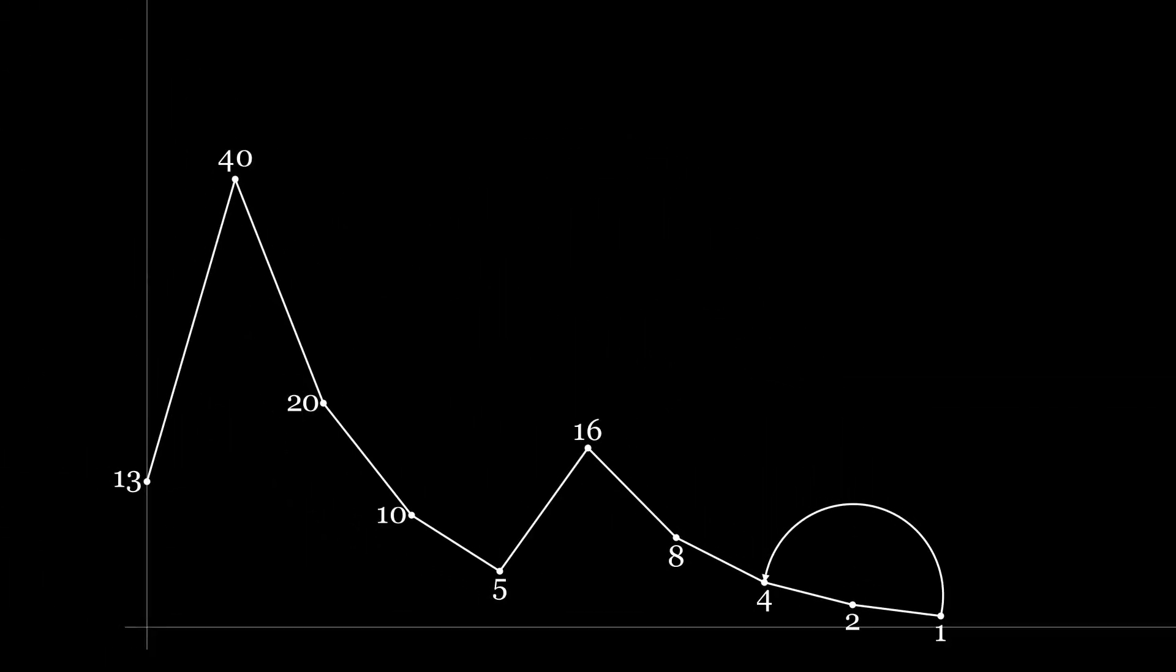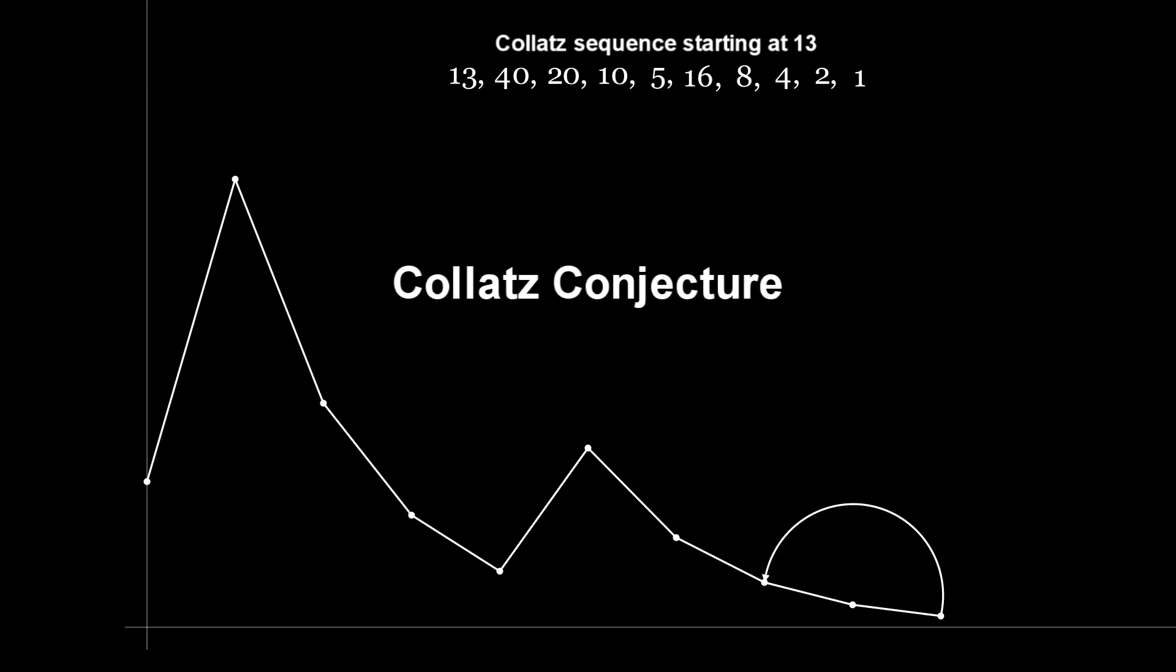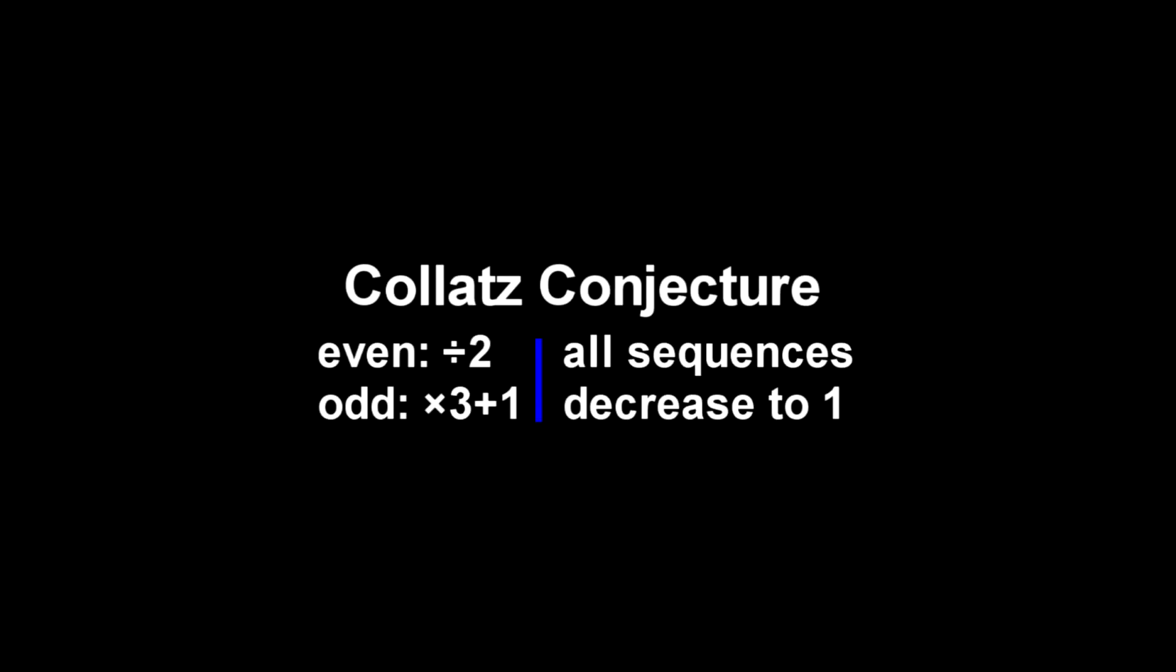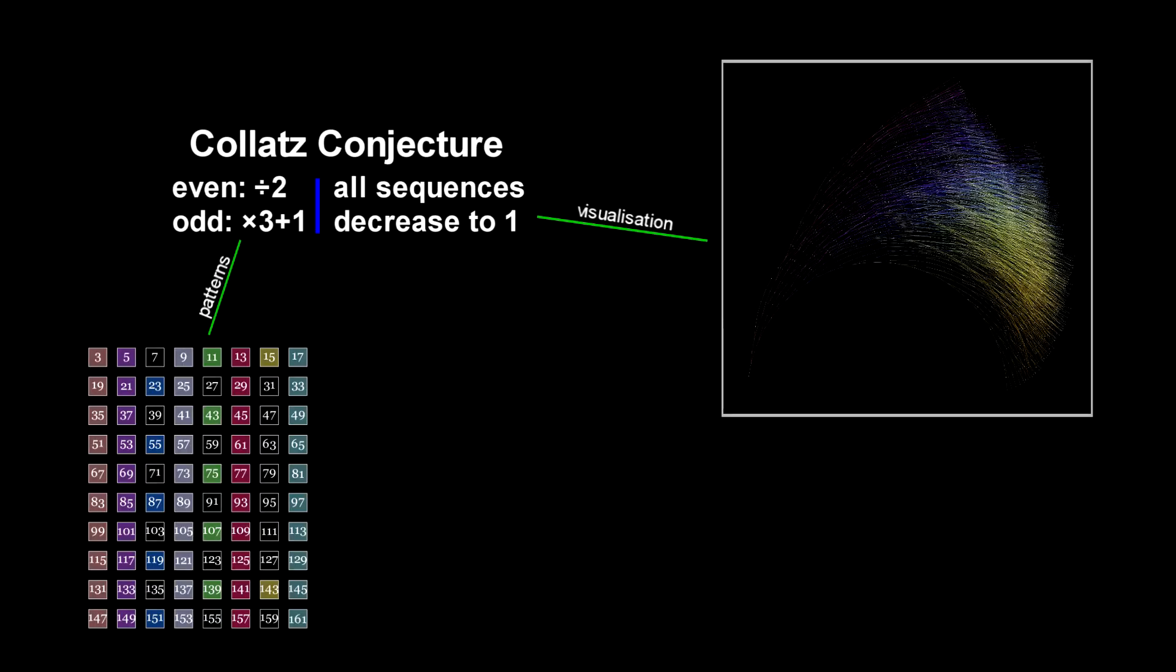These numbers that we have derived is what is called a Collatz sequence. The Collatz conjecture states that for any positive starting integer, all sequences will eventually drop down to 1 and repeat this 4-2-1 loop. The rules are simple, yet it remains unsolved since its creation in 1937.